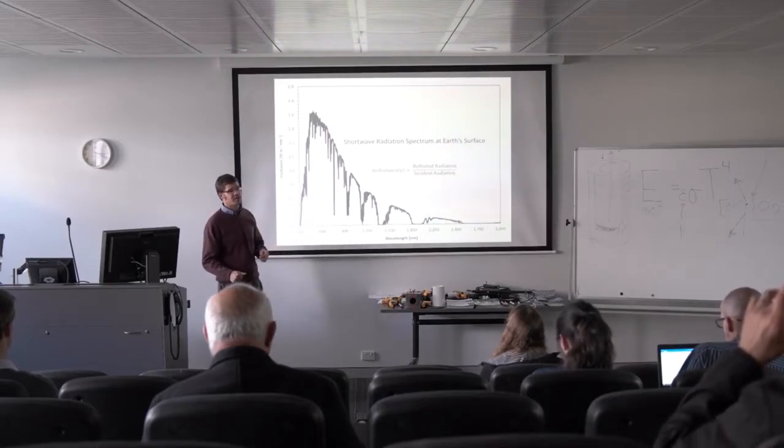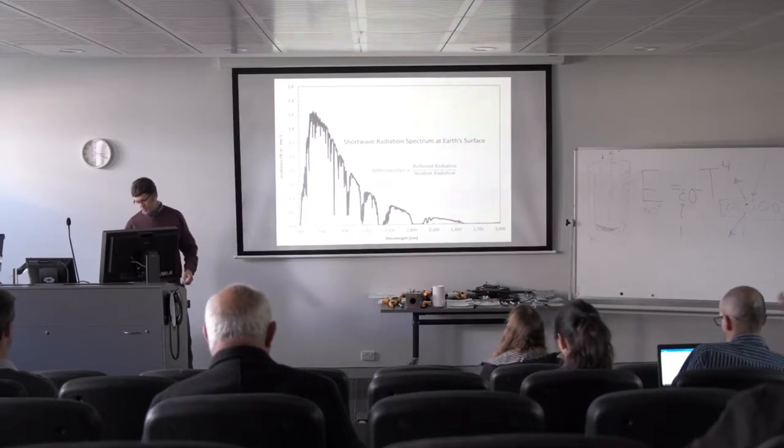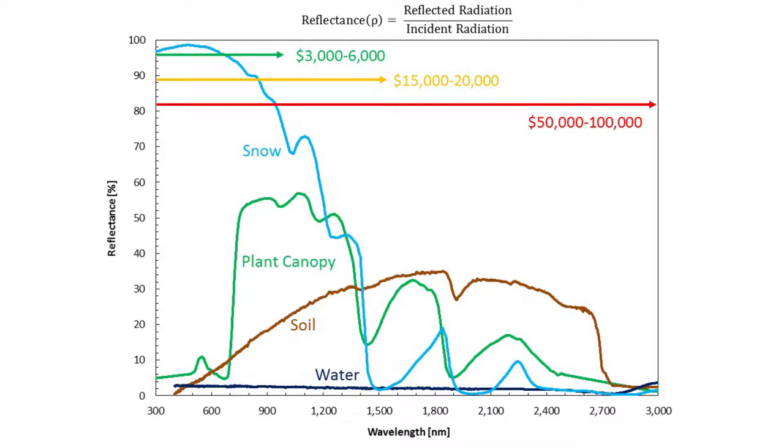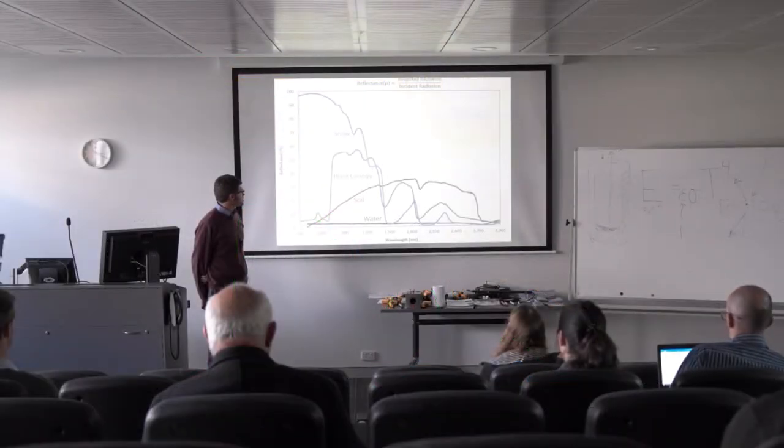We have to invert our sensor and measure the reflected signal, which goes in the numerator of our equation. When we do that, it looks like this for some surfaces we're all familiar with: water, soil, a plant canopy, and snow.